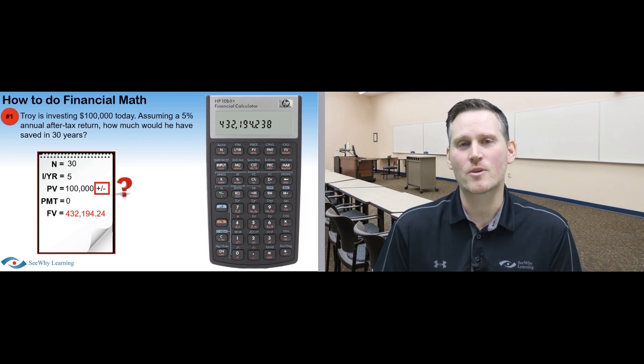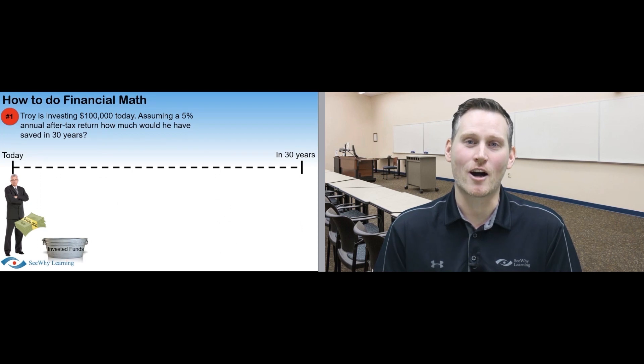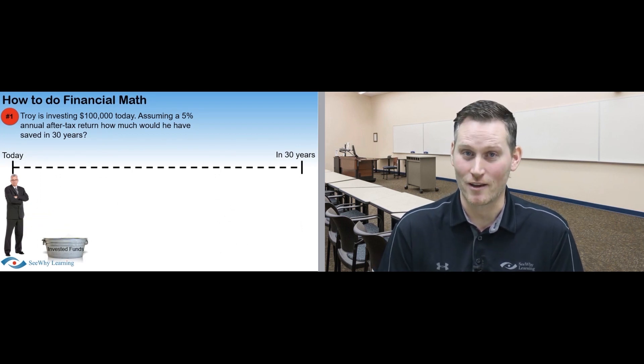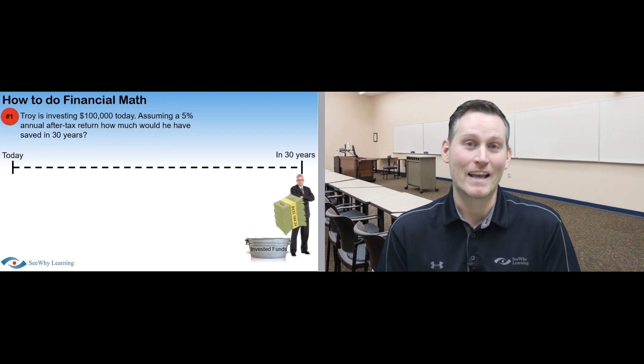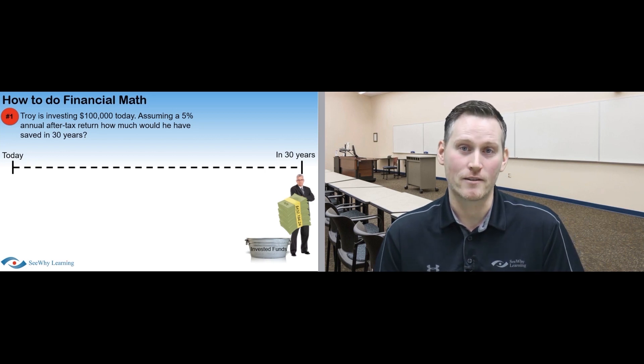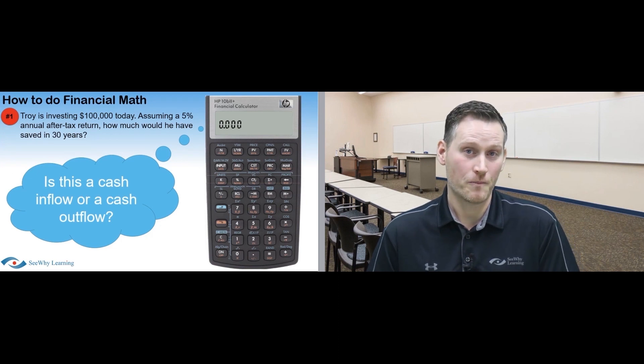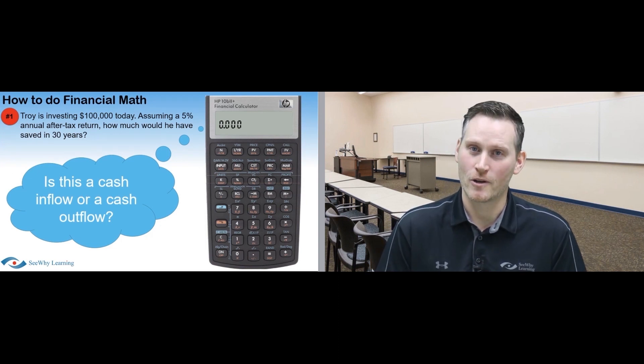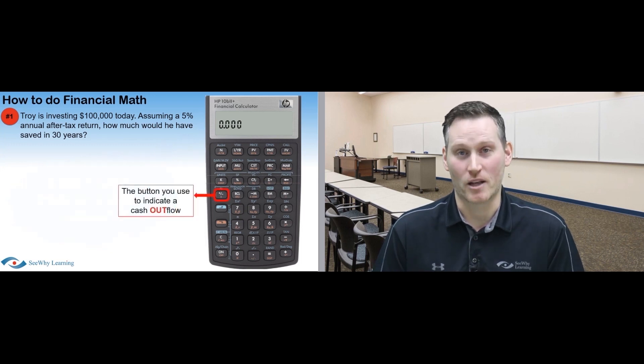Now you may be wondering, why did we use the plus-minus key? Well keep in mind in this scenario, Troy's taking $100,000 out of his pocket to invest today, resulting in him being able to put roughly $432,000 into his pocket 30 years from now. And because one's going out and the other's going in, the calculator needs to know which is which. In other words, which is a cash inflow, and which is a cash outflow. Otherwise, the calculator can get confused and give you either a wrong answer or no solution.